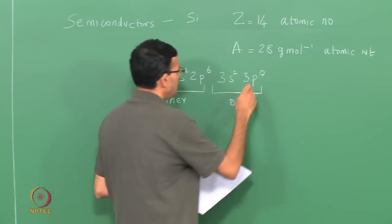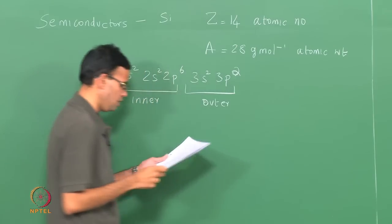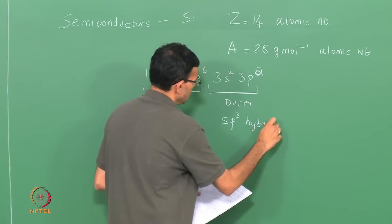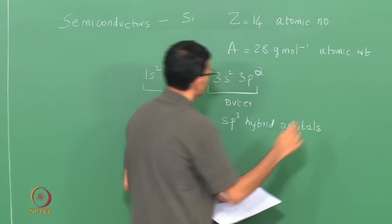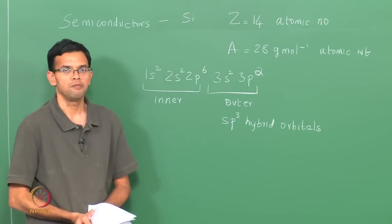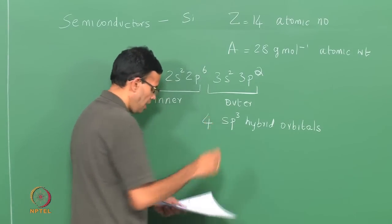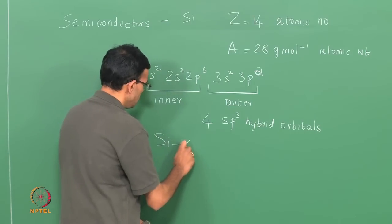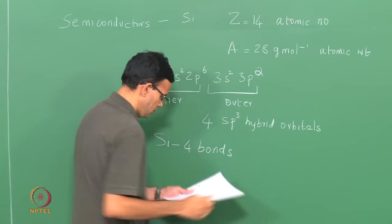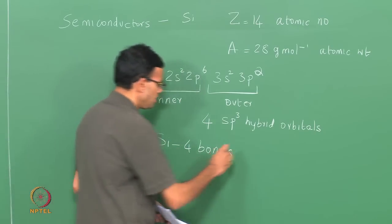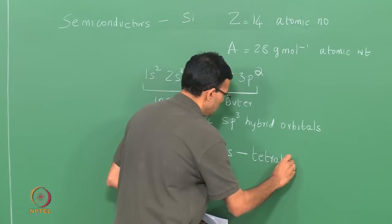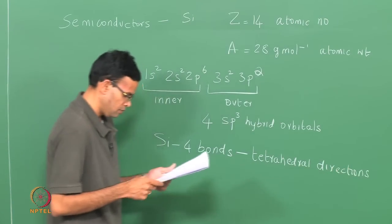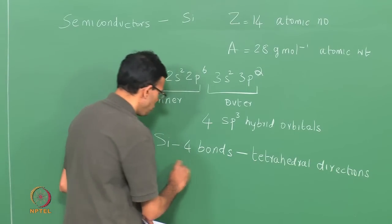The 3S and 3P electrons rearrange to form SP3 hybrid orbitals. With 2 electrons in the S and 2 electrons in the P, they hybridize to form 4 SP3 hybrid orbitals. Thus each silicon atom can form 4 bonds. These bonds are directed in tetrahedral directions, and essentially what you have is a diamond lattice.